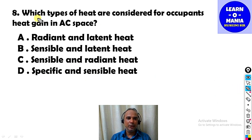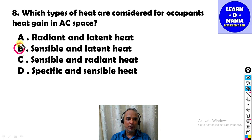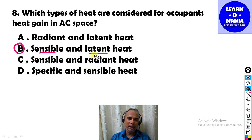Our next MCQ: Which types of heat are considered for occupants' heat gain in AC space? Which heat is generated by people in a confined AC space? The correct option is B — occupants produce both sensible heat and latent heat, which must be removed from the AC space.